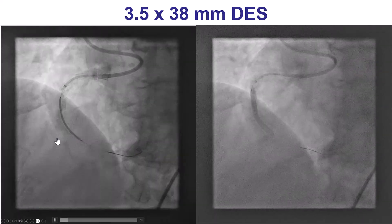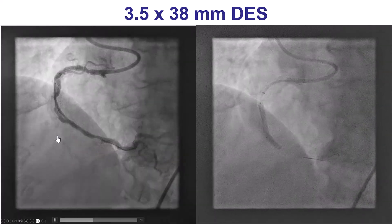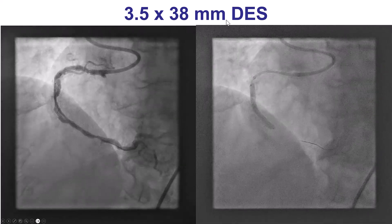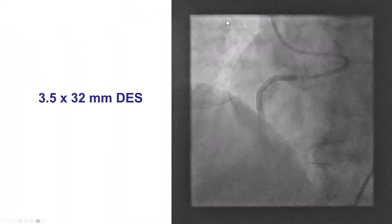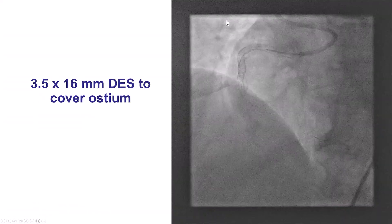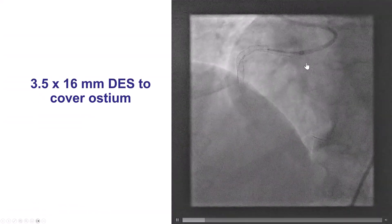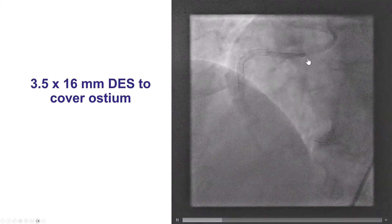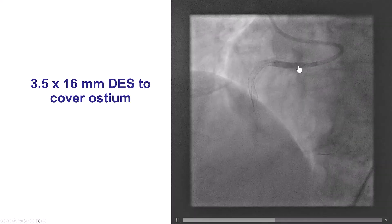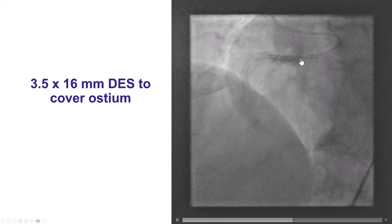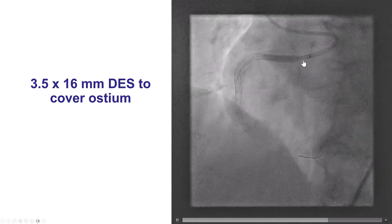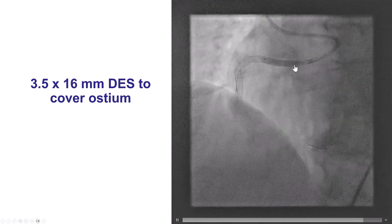There was some dissection caused by the predilatation. This was covered by a long drug-eluting stent, overlapped more proximally with another drug-eluting stent. We wanted to ensure that we cover the ostium, so we placed the stent protruding about a couple millimeters inside the aorta.